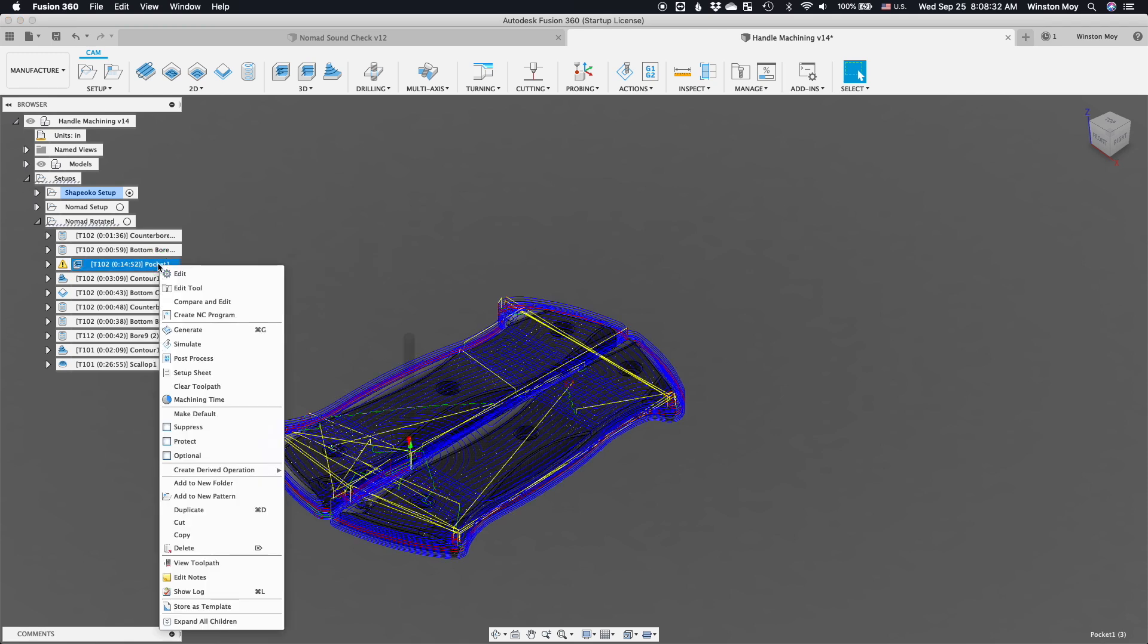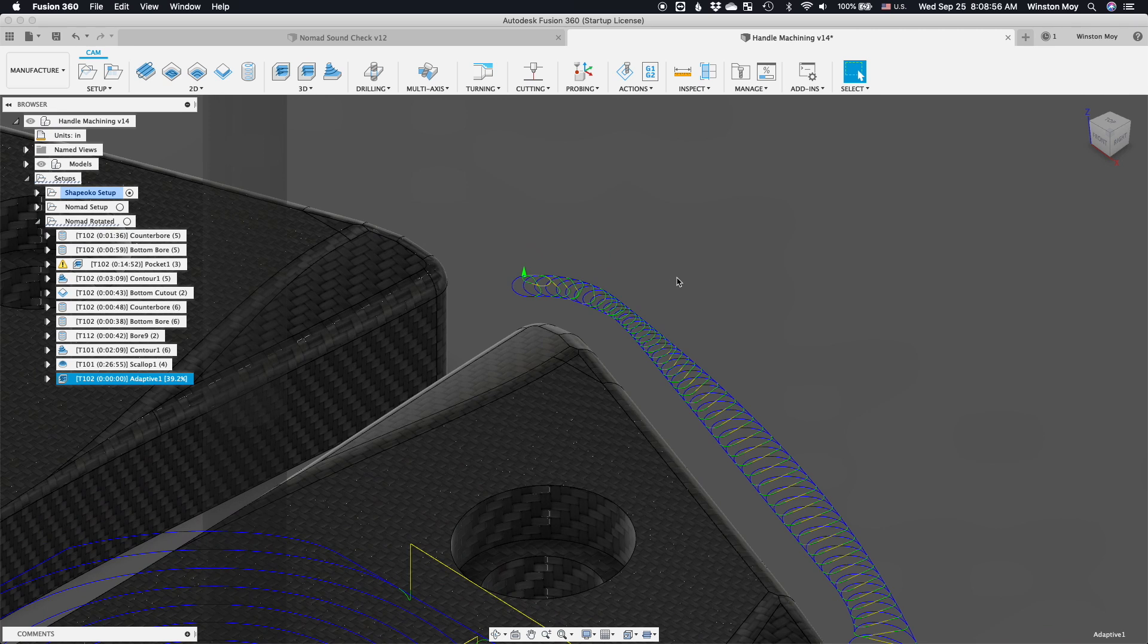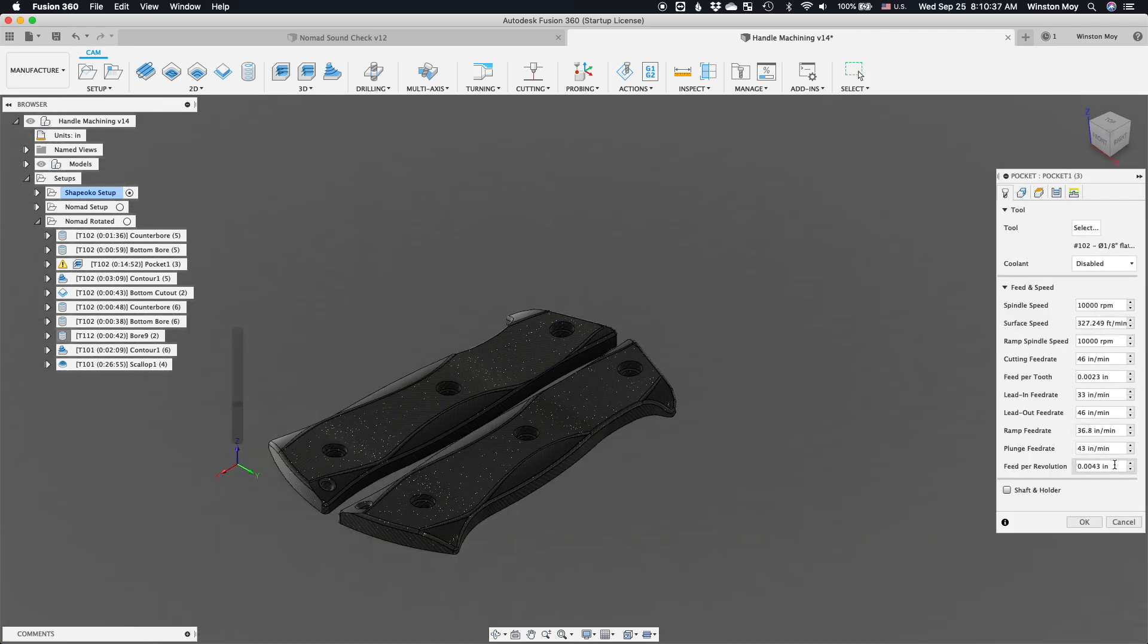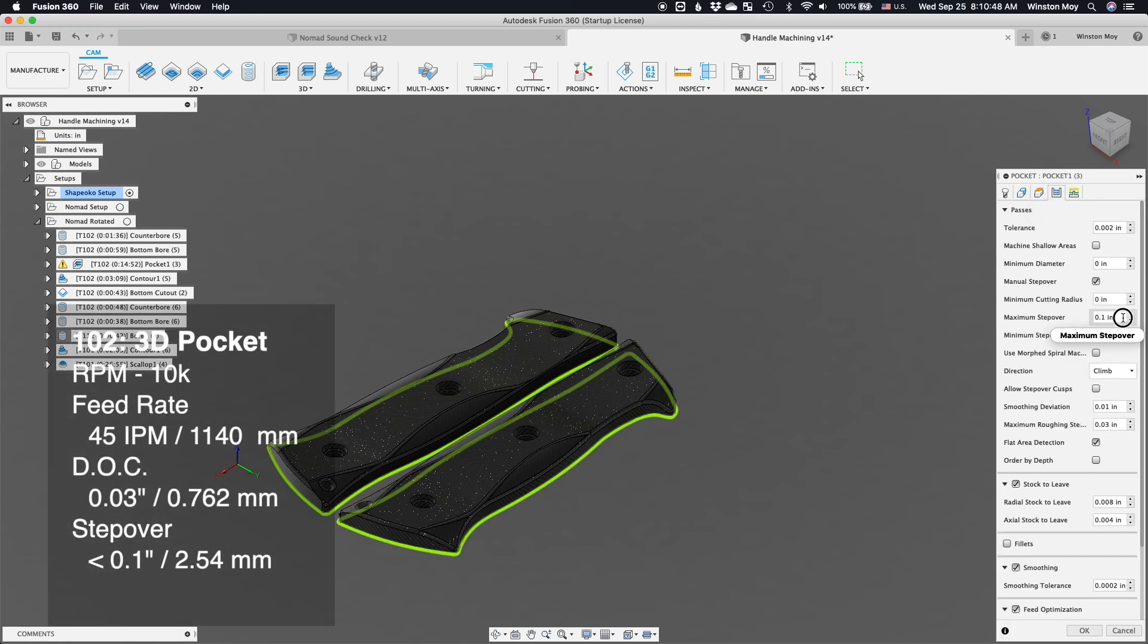Next, I'll use a 3D pocketing toolpath to rough away the material around the scales. I'm all about adaptive toolpaths, but with the way I'm containing my toolpaths, going around the outer profile with an adaptive is going to be extremely inefficient. My machining recipe is as follows: 10,000 rpm, 45 inches per minute, a stepover of no more than 0.1 inches, and a 0.03 inch depth of cut.